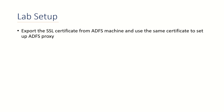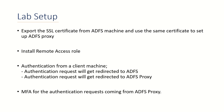Let's talk about the steps we'll take to get this lab configured. The very first thing we'll do is export the SSL certificate from our ADFS machine and use the same certificate to set up ADFS proxy trust. In your case you can use a different certificate, but you must have the private key of that certificate. Then we'll install the remote access role, and finally we'll do an authentication check to see the behavior when requests go directly to ADFS versus through the proxy.